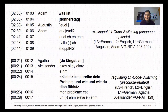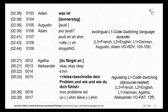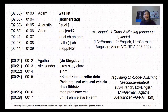Now listen to the other, the second class. That is a class of learners of French who are pupils that grow up in Germany. Adam in the first example is looking for the target word for 'Donnerstag', thus Thursday, and Augustin is able to help him out. You can call this switch an exolingual switch, a switch that really deals with learning the target language and with discussing its features.